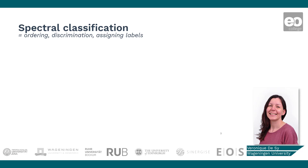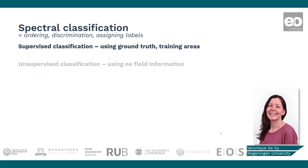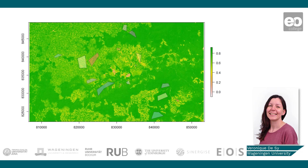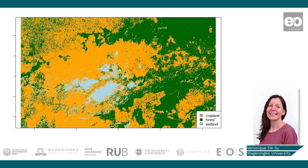Common classification procedures can be broken down into two broad subdivisions based on the method used: supervised classification and unsupervised classification. In a supervised classification, the analyst identifies in the image homogeneous and representative samples of the different land cover types of interest. These samples are referred to as training areas. The spectral information in all bands for the pixels within these training areas are used to train the computer algorithm to recognize spectrally similar areas for each class.